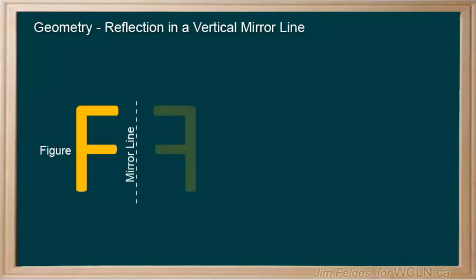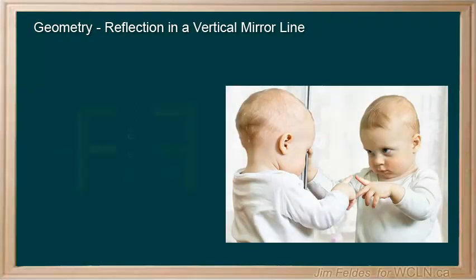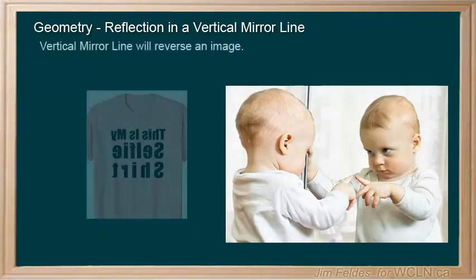The image appears on the other side of the mirror line as an exact copy, but backwards. This is the way we see ourselves in a mirror. Our right appears left. So, a vertical mirror line will reverse an image.